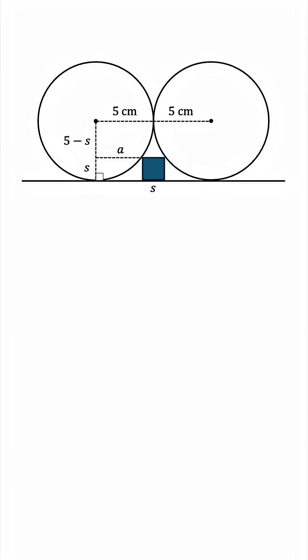If we draw this A segment over here, then this entire length will be A plus S plus A, and it must be 2 radii. In other words, 2A plus S equals 10. This is the first equation relating the two.